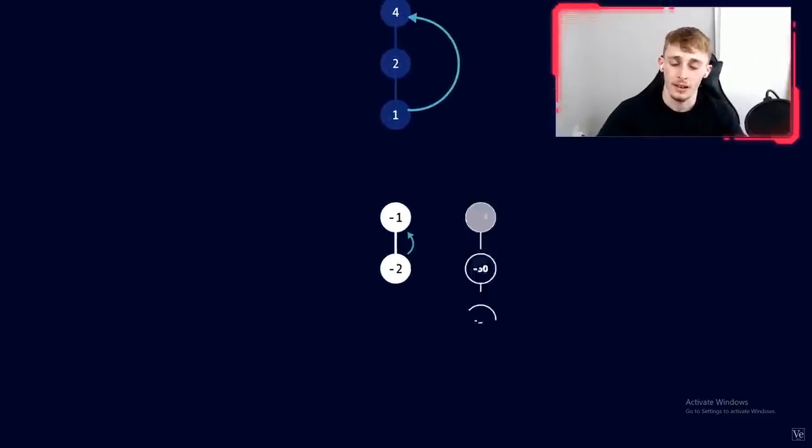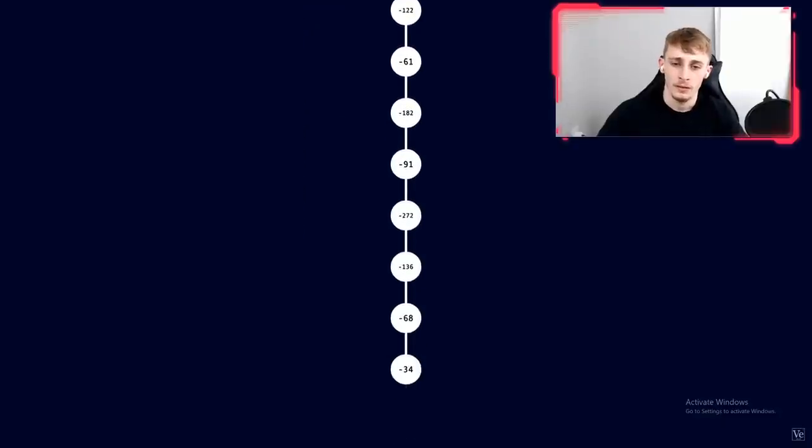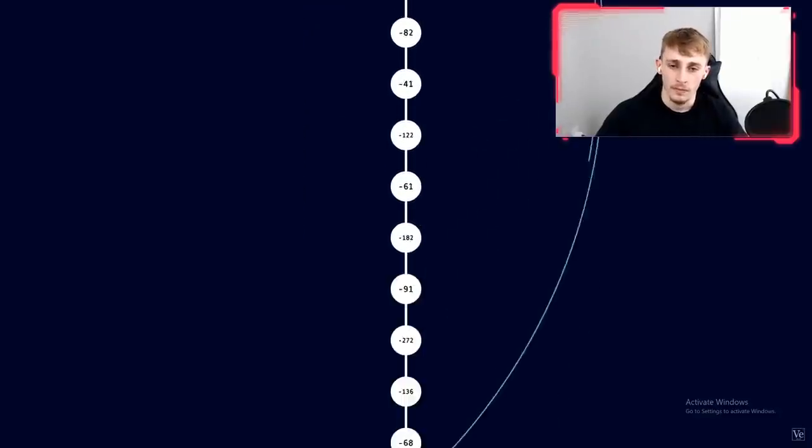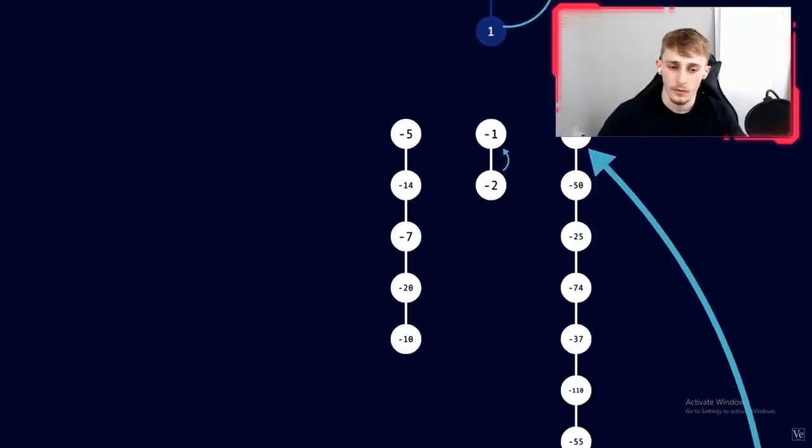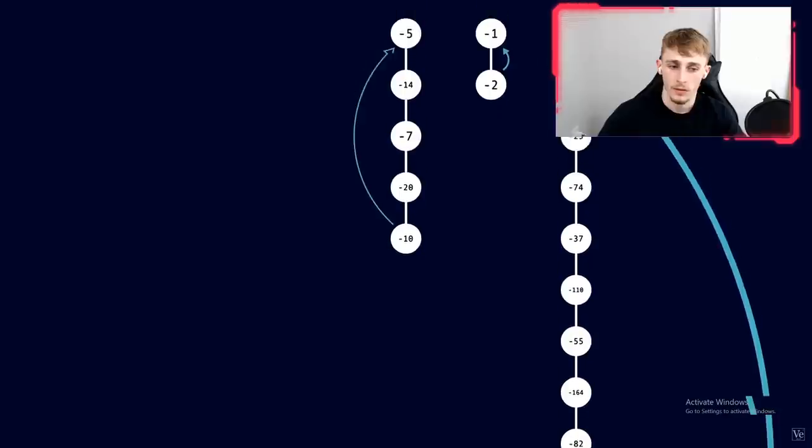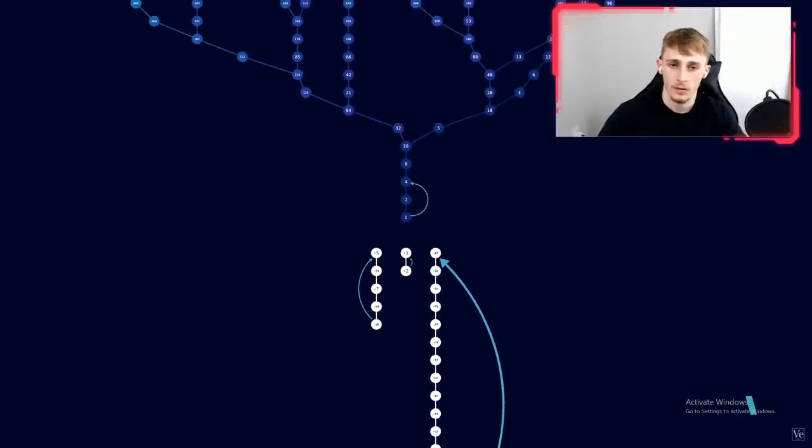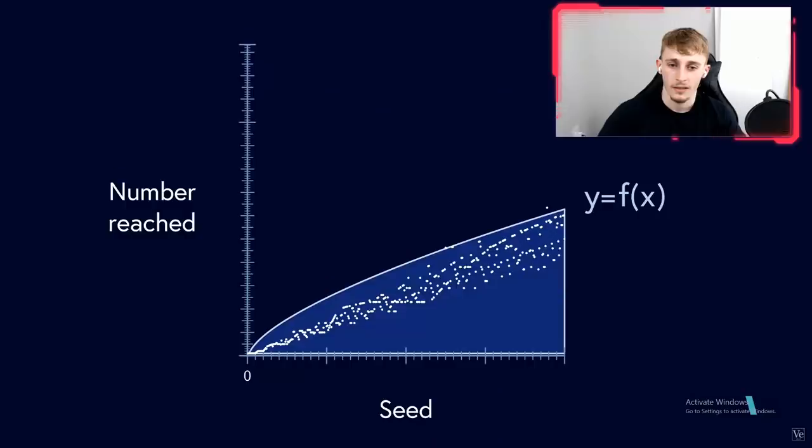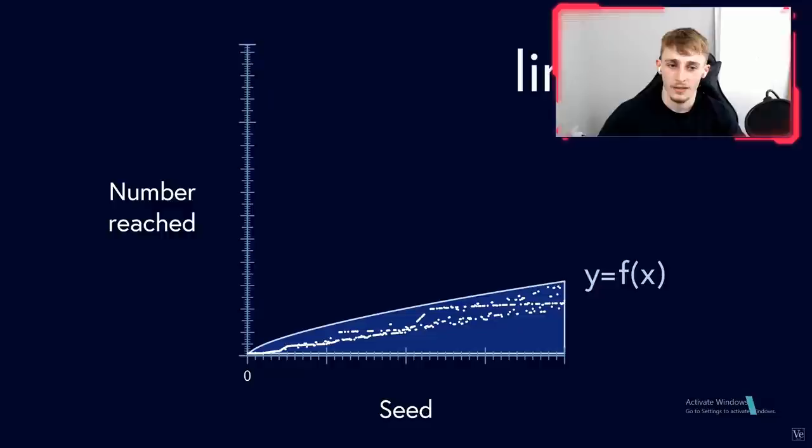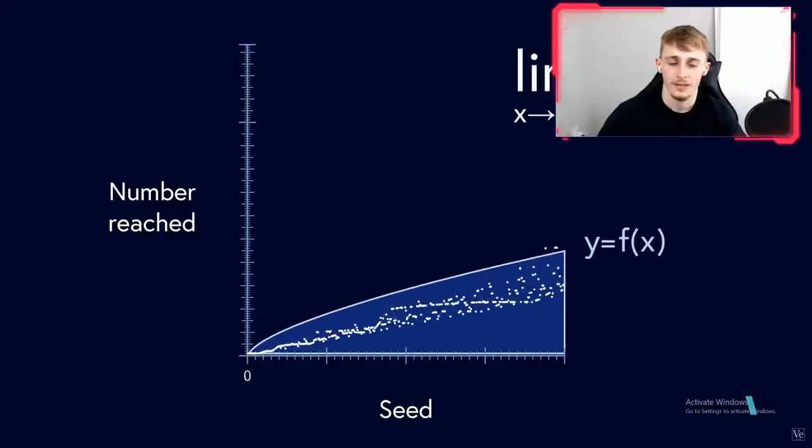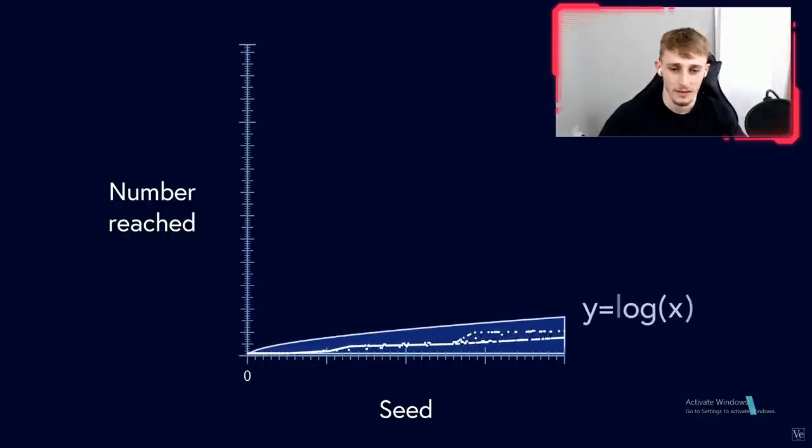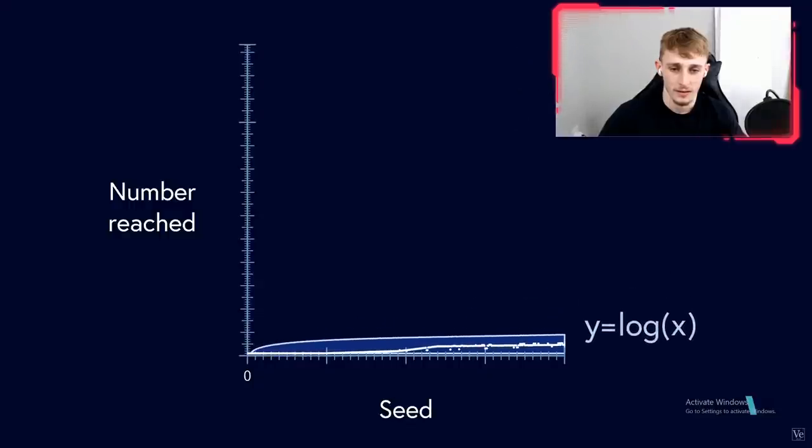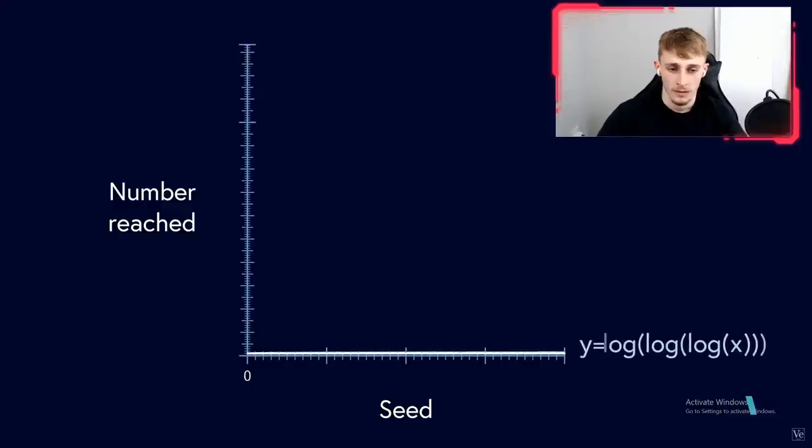But something strange happens if you include negative numbers. Applying the same 3x plus 1 rules as before, there is not one loop, not two loops, but three independent loops of numbers. And they start at low values like minus 17 and minus 5. Why should there be disconnected loops on the negative side of the number line but not on the positive side?